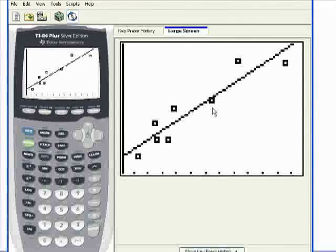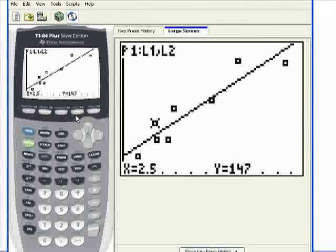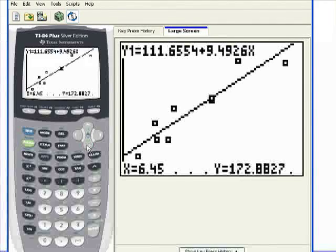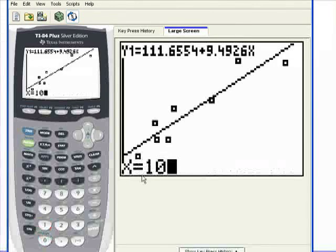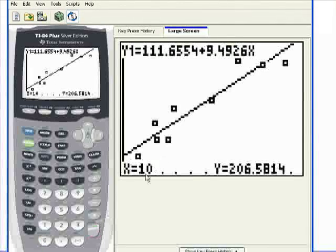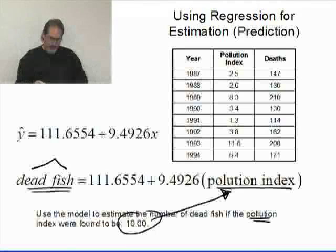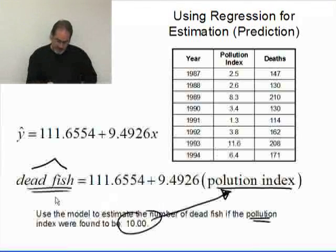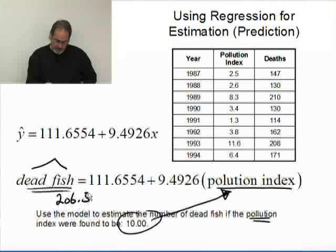There's the regression line. If I press trace, you see it's blinking here on one of the data values. Press the down arrow key once and now I'm actually on the line, because you can see the equation here and I have the x and y coordinates. For a value of 10, I simply type in 10, hit enter, and it's going to jump to the location on the line where x is 10 and tell you the predicted number of dead fish is 206.58.